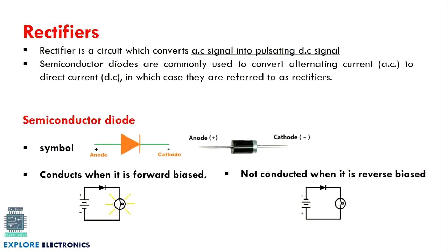The diode component available in the market has a silver line indicating the cathode (negative end). How does the diode function? If we connect the anode to a positive power supply and the cathode to the negative supply, the diode is forward biased and conducts — current flows in one direction only. When reverse biased — negative supply connected to anode and positive to cathode — the diode does not conduct; there is no current flow in the reverse direction.